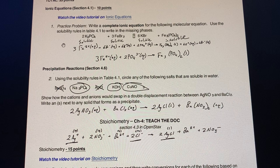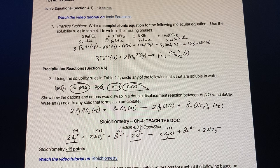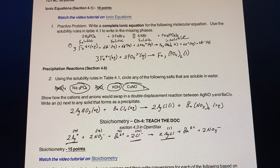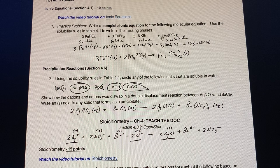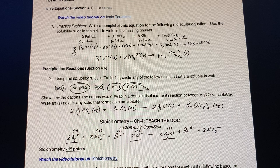For the first practice problem we had to write a complete ionic equation for the following molecular equation and we used the solubility rules in table 4.1 to write in the missing phases. So here we looked at which ones are soluble versus insoluble, and this was insoluble due to the iron that is attached to the PO4, so we essentially split them apart.